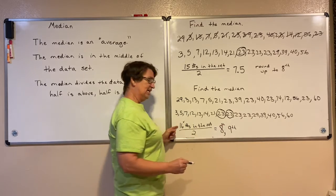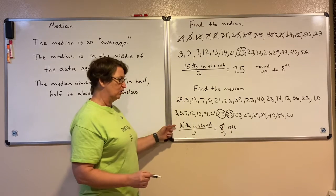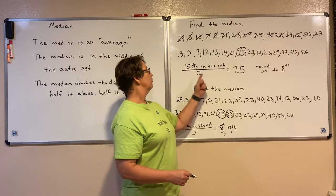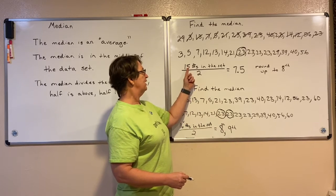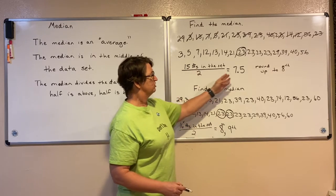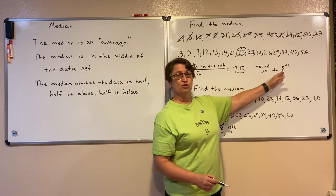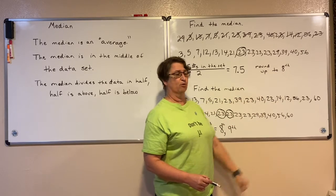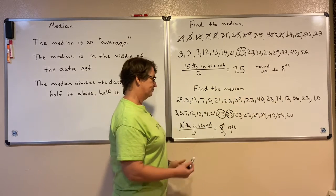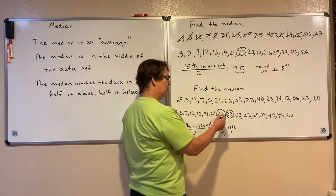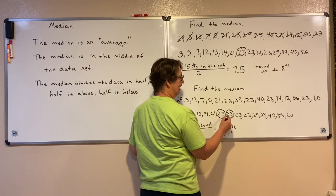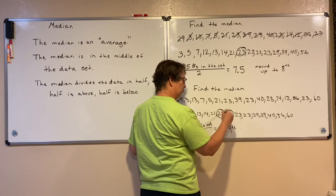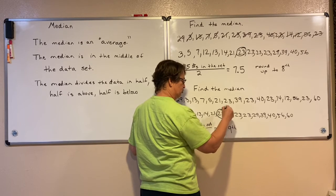When we have an even number, we're going to have two numbers in the middle. When we have an odd number, we will just have one number there in the middle. Now here they were both 23, so our middle number is 23.